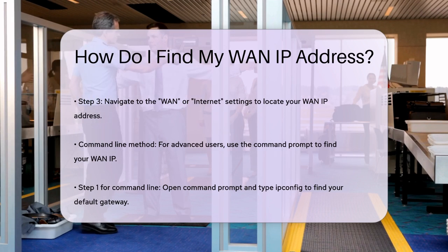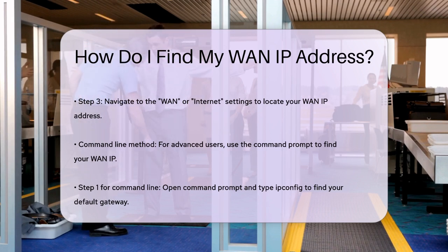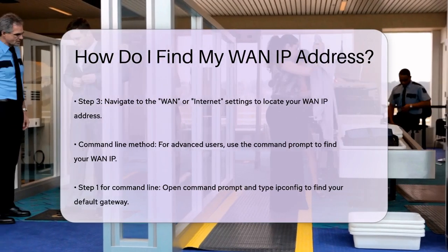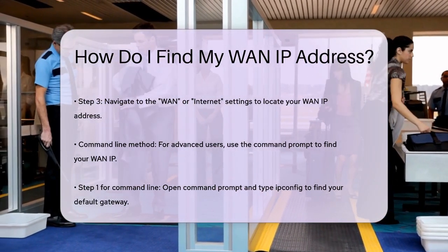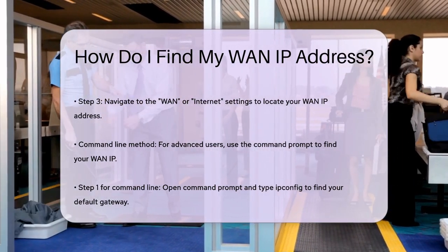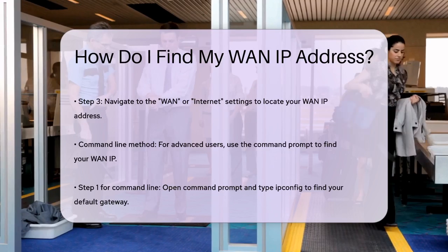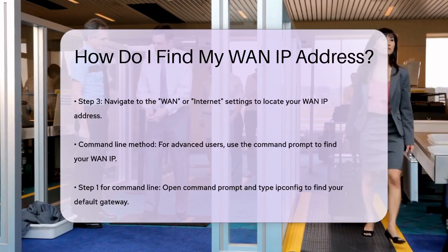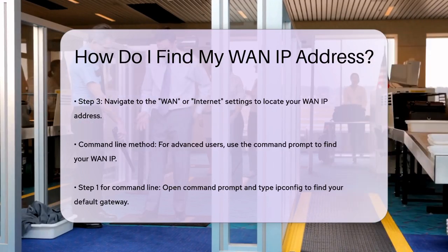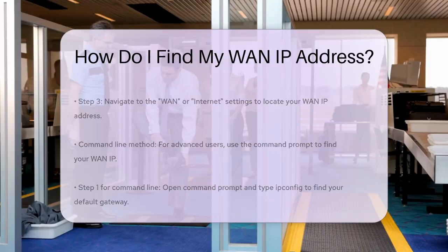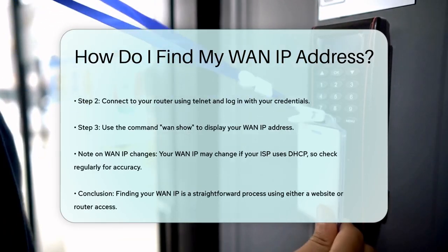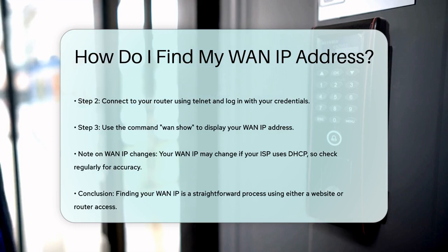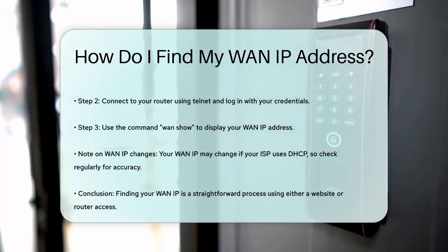Another method involves using the command line, especially if you're comfortable with it. Open the command prompt on your computer. Type ipconfig to find your default gateway, which is the IP address of your router. Use telnet to connect to your router by typing telnet followed by your router's IP address. Log into your router using your credentials, then type WAN show to display your WAN IP address.